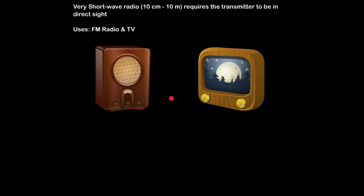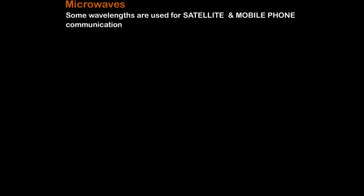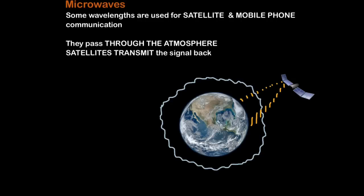Next up we have microwaves which can also be used for communication, in fact you could easily argue that microwaves are part of the radio wave spectrum. Some wavelengths are used for satellite communication, for example for satellite TV and mobile phone communication which I'm sure you're all very aware of and love and depend on relentlessly. So what's special about microwaves is that they can pass through the watery atmosphere and reach satellites which transmit the signal back.